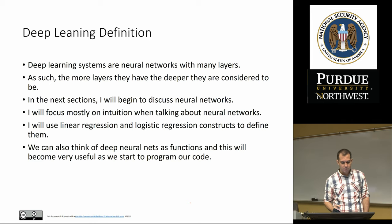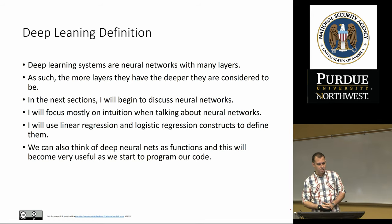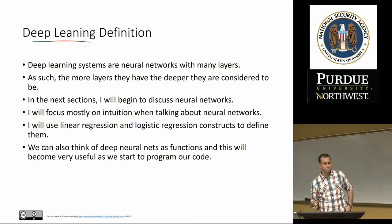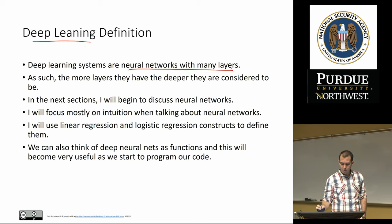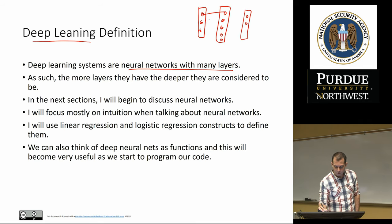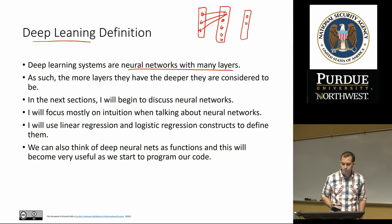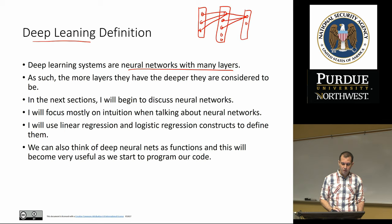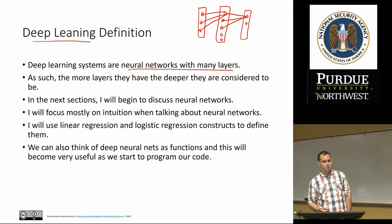Deep learning systems are neural networks with many layers. We define a neural network as a connection of neurons — for example, three neurons connected to two neurons, where one set is input to the other. Deep learning systems simply have many such layers. The more layers they have, the deeper they are considered. A deep neural network might have three or more hidden layers between input and output.